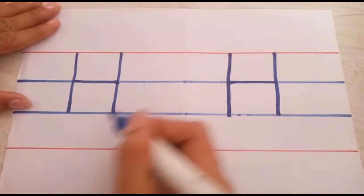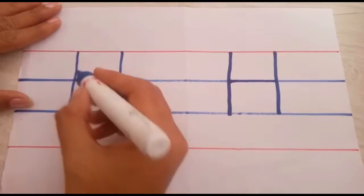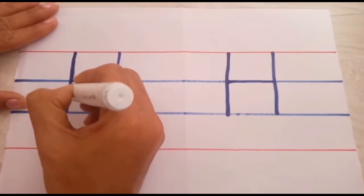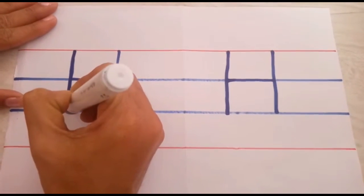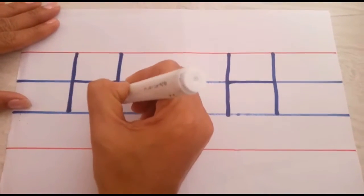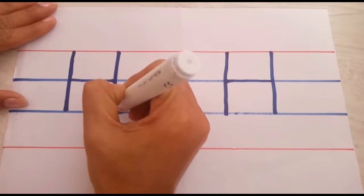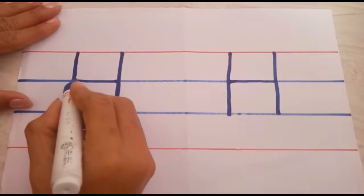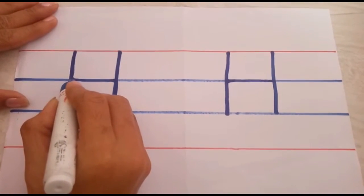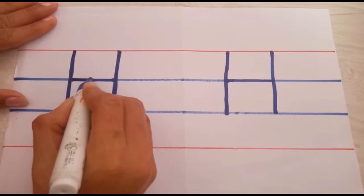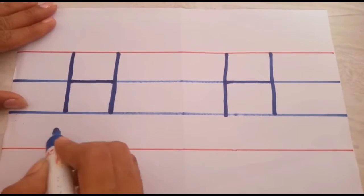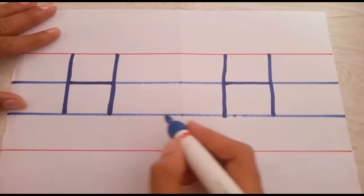Shall we repeat once again, children? One standing line. Red line to blue line. One more standing line. Red line to third blue line. We will go to second blue line. We will put one sleeping line, children. Which letter is it? H!